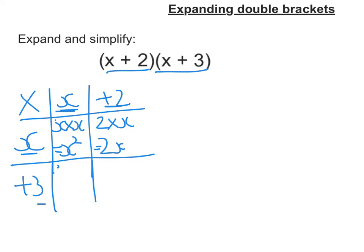This one here I'm going to do x times 3. So x times 3 is going to be 3x. And in the last one I'm going to do 2 times 3, and that's 6.